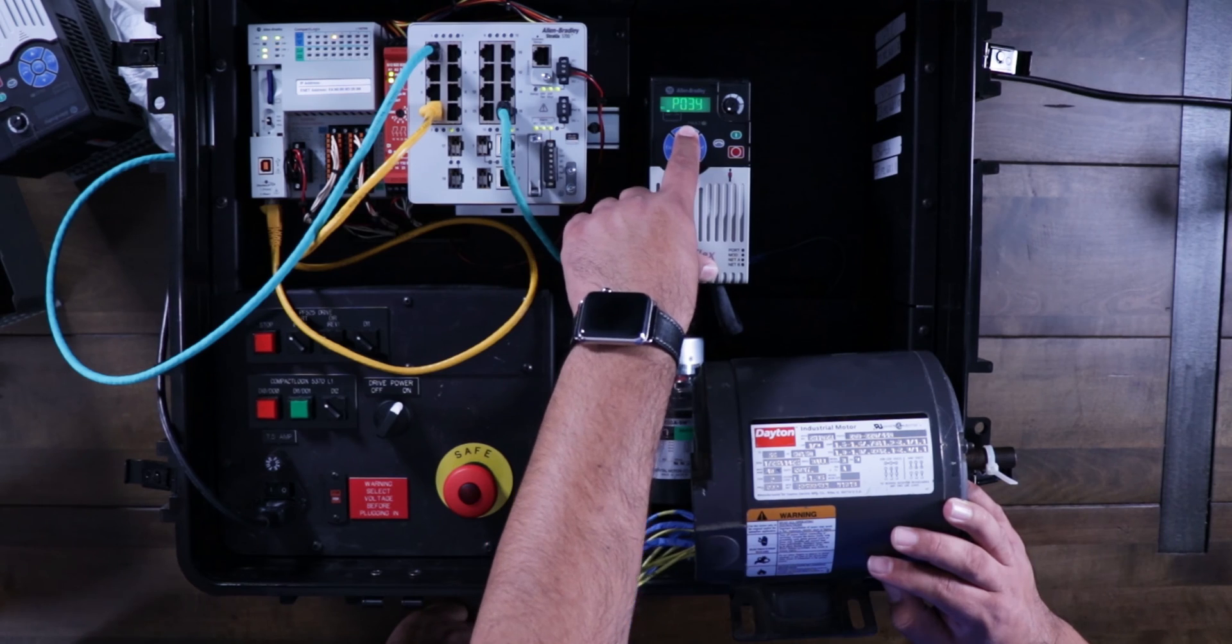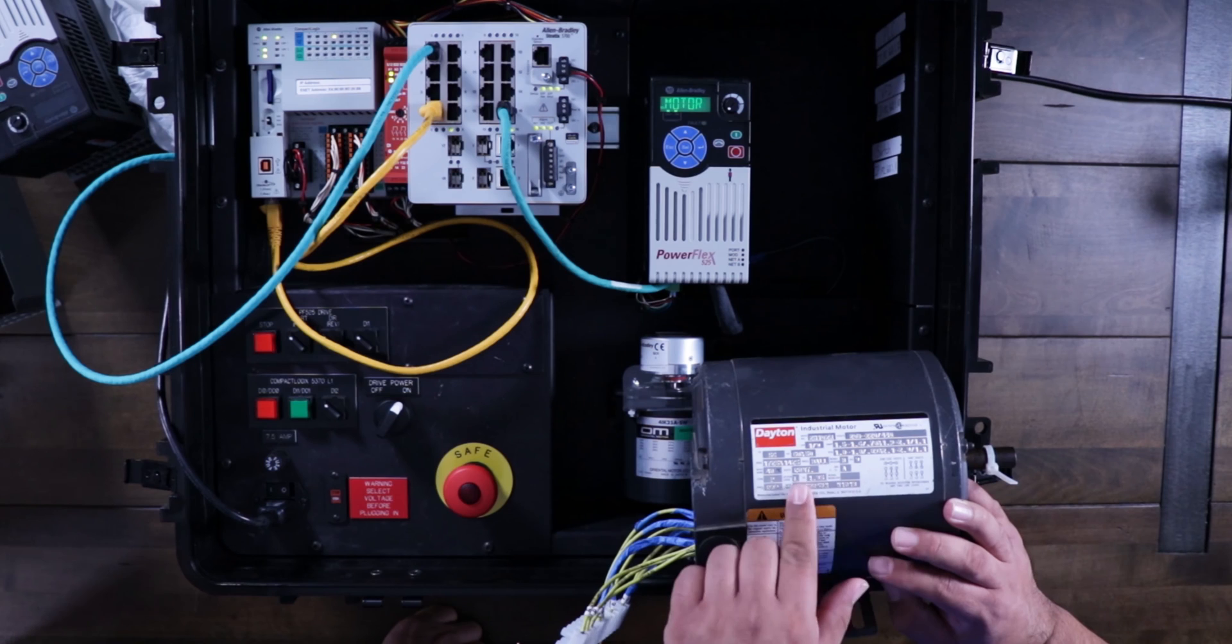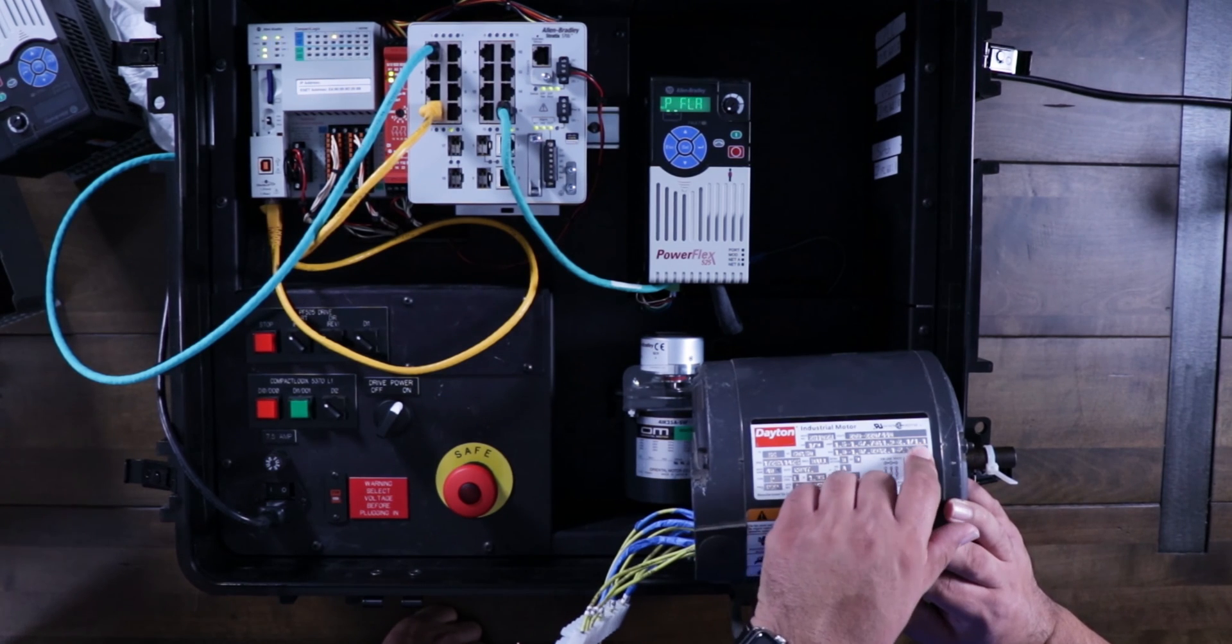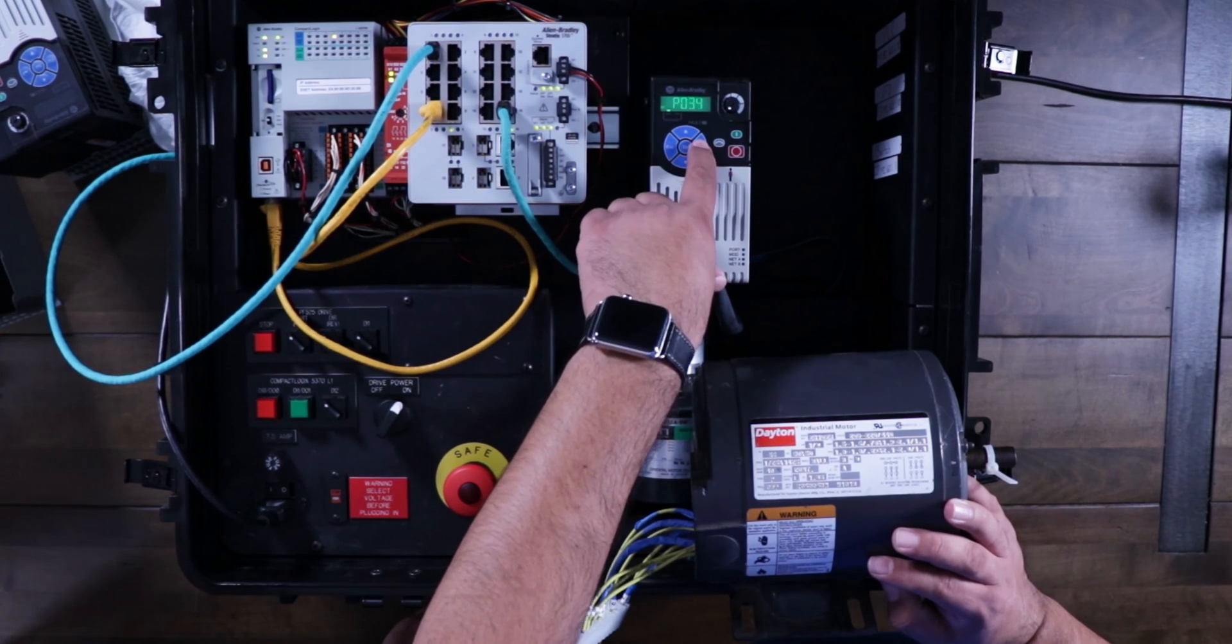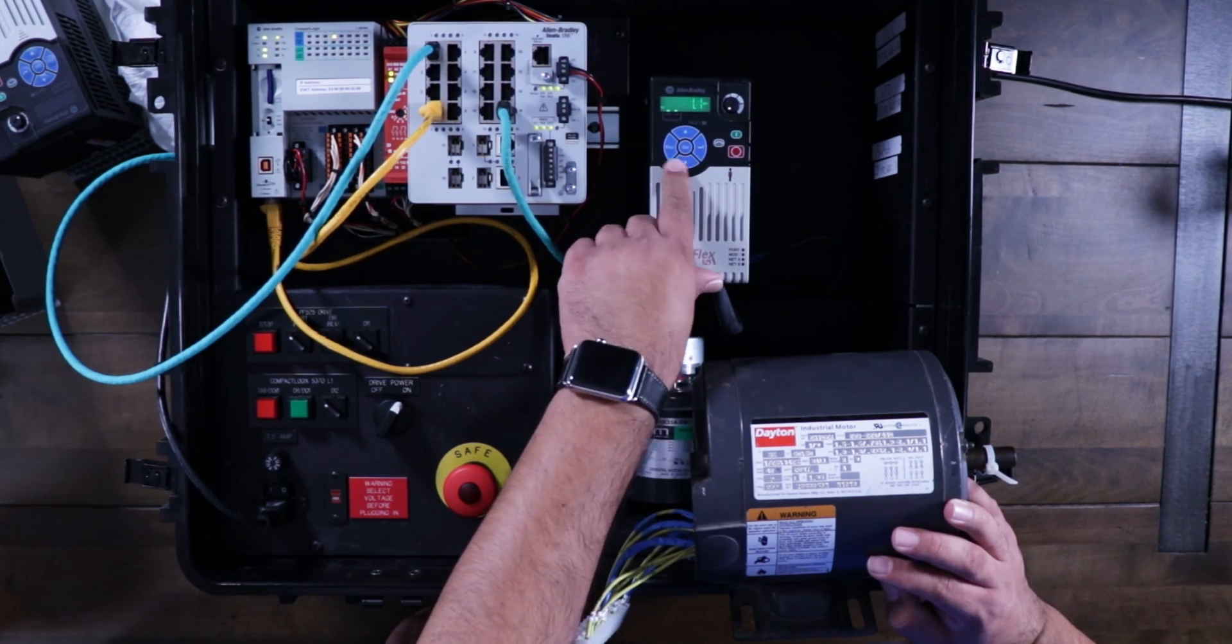So P34, that'll be the full load amps of the motor. And that's taken right off of the motor with no service factor included. This one is 1.1. So we can select that and set it for 1.1.